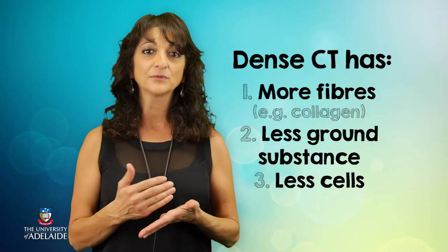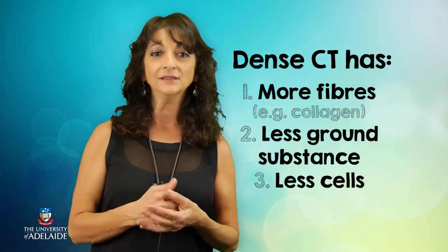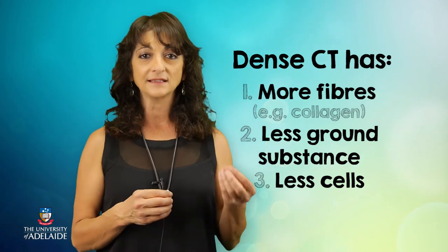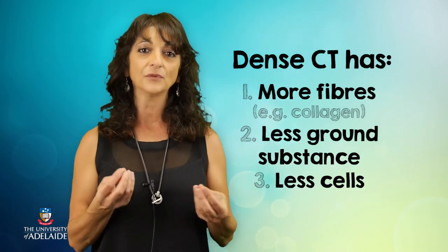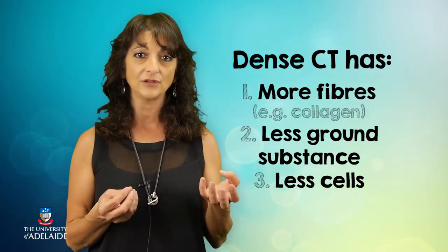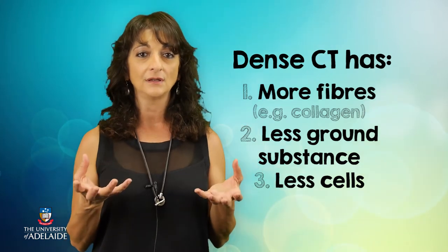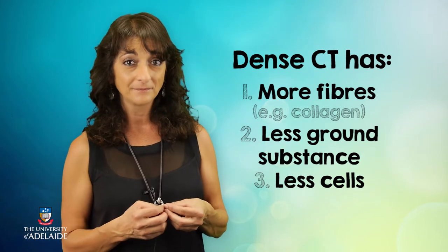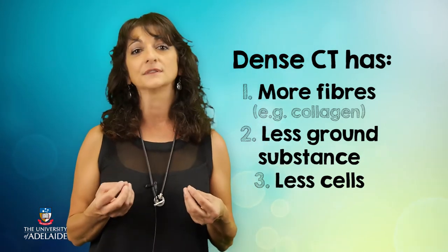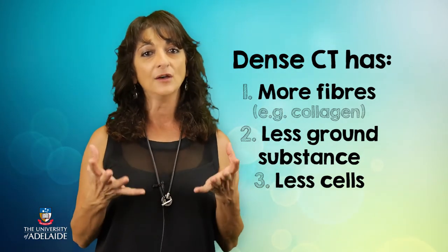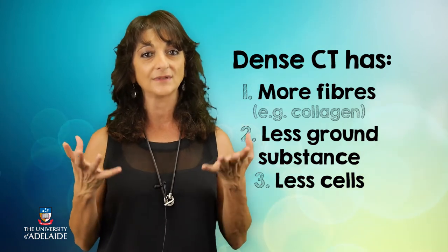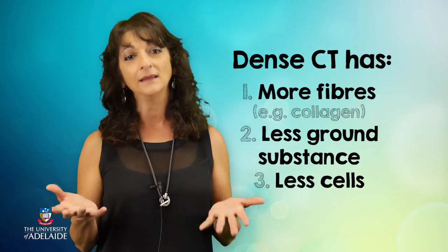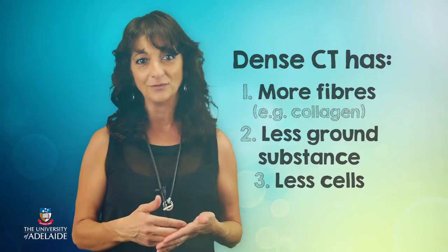The main fibres we find there are collagen and elastic. The lack of space between the cells and the fibres is what differentiates this dense connective tissue from loose connective tissue, and the main cell we find there is the fibroblast. There are very few other cells. When you think about how many fibres we find in this extracellular matrix, it really does make a lot of sense as to why the fibroblast is the main cell.